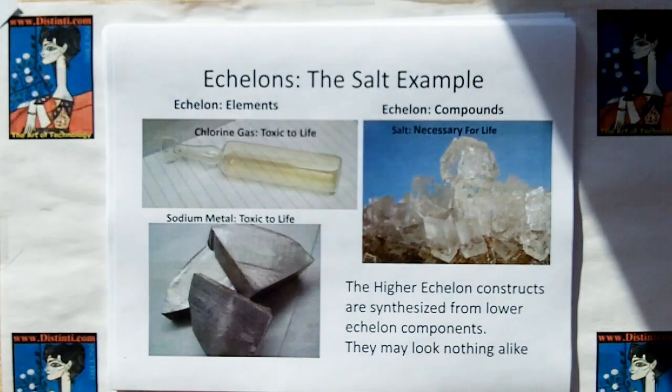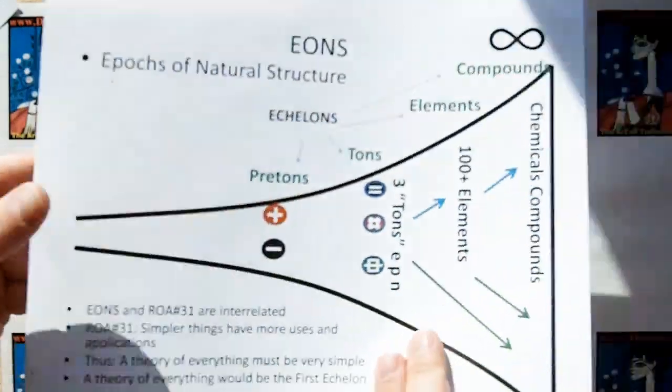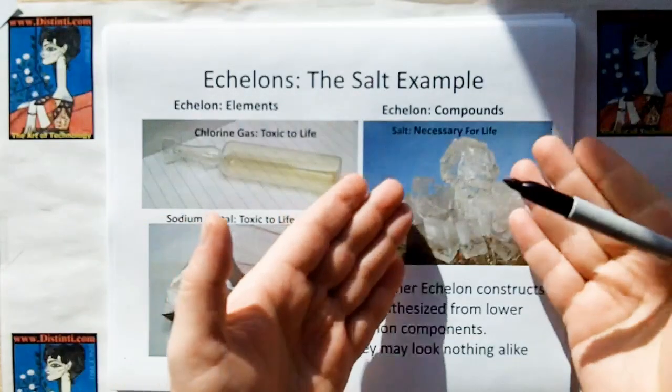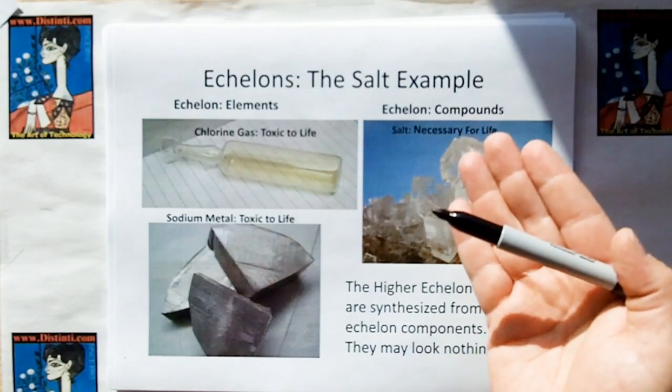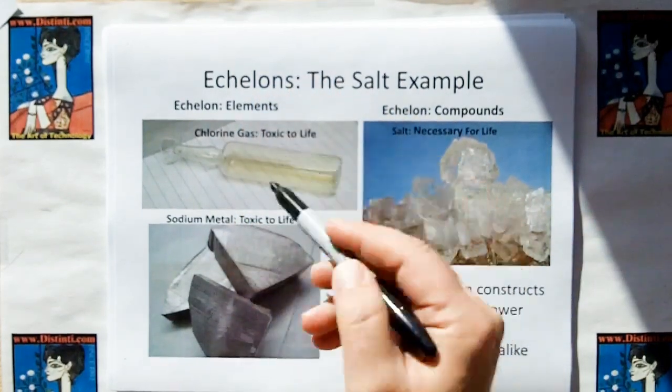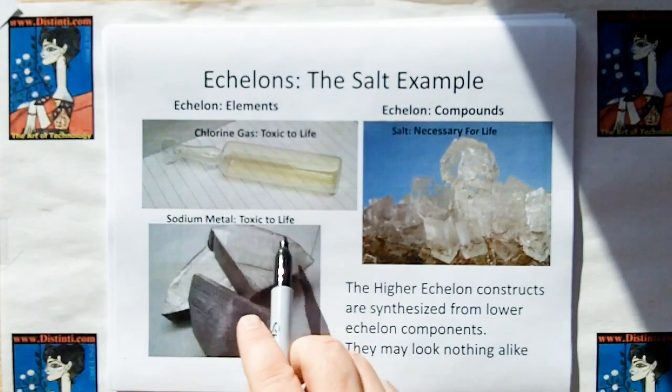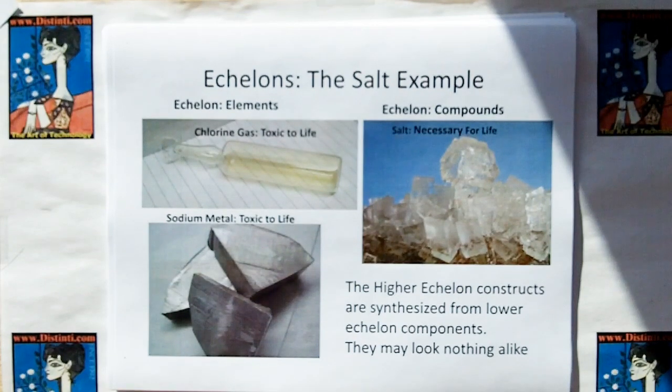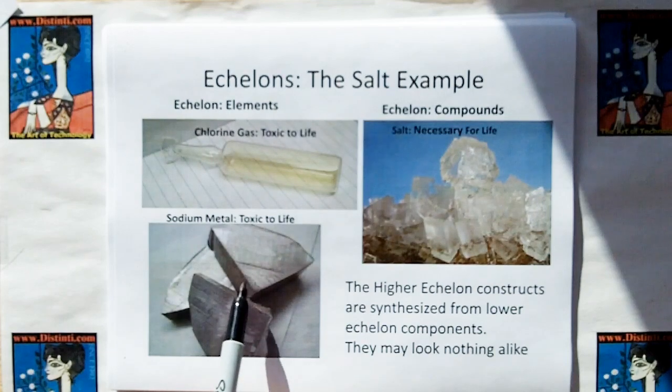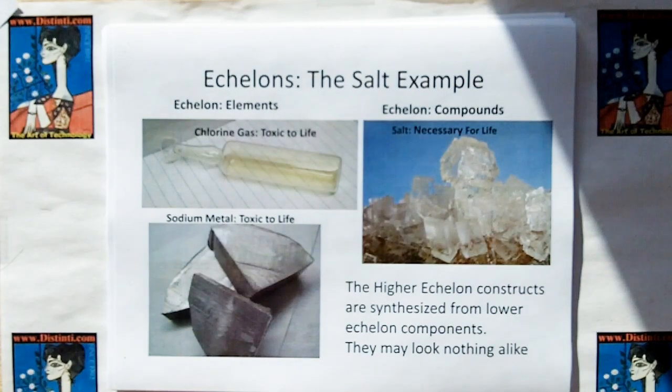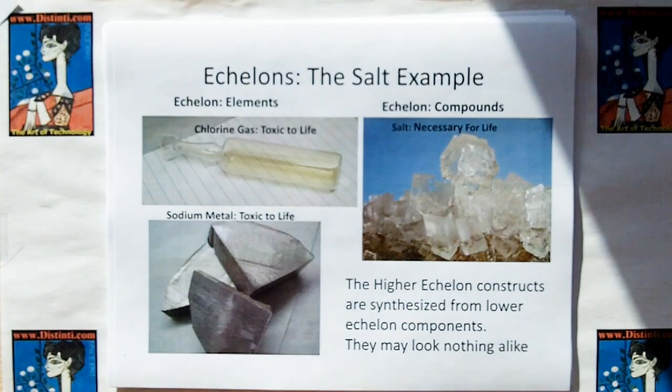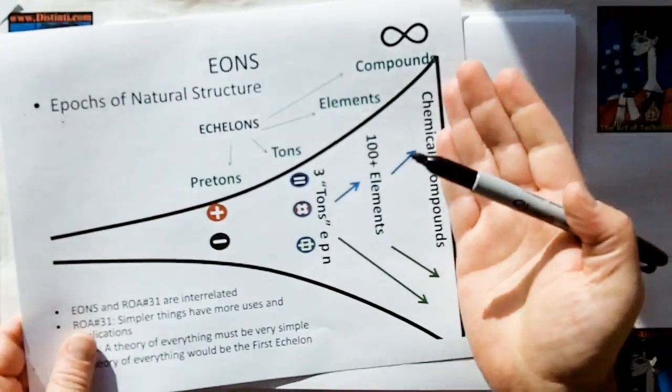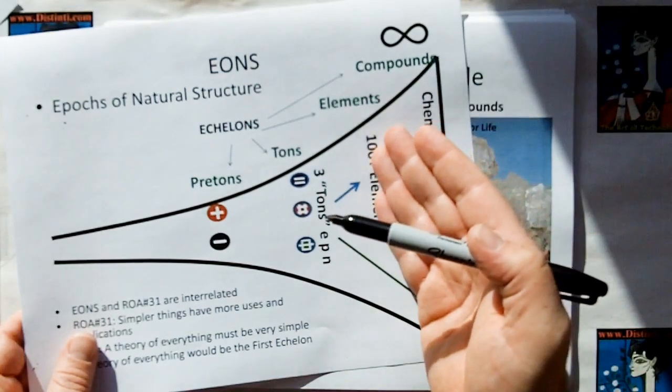And let me give you an example of echelons. The compound echelon, which is right here, chemical compounds, and here I'm showing salt. Salt is a necessary compound for life. Salt, at this echelon, is synthesized by the elements in the element echelon, and those elements are chlorine gas, which is toxic to life, and sodium metal, which is toxic to life, because if you swallowed a bunch of sodium metal, you'd pretty much burst into a ball of flames, because sodium reacts violently with water. But here, these toxic elements look nothing like salt, which is synthesized from them, and this is essential for life.